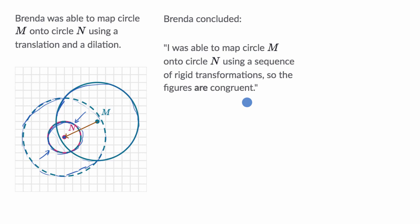All right, now let's work on this together. So she was able to map circle M onto circle N using a sequence of transformations. She did a translation and then a dilation. Those are all transformations.